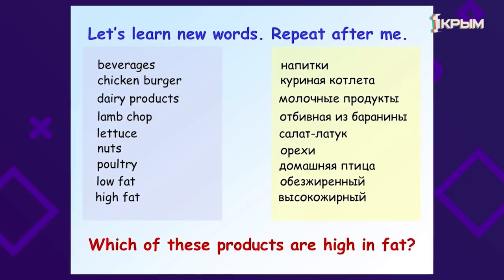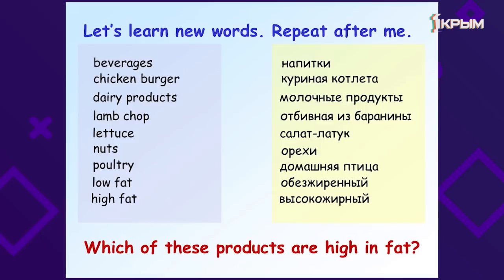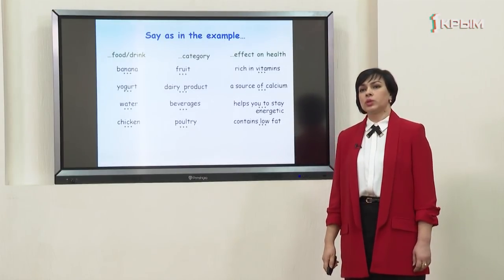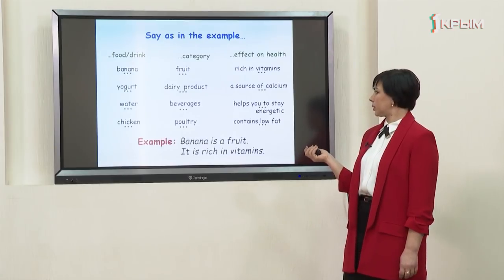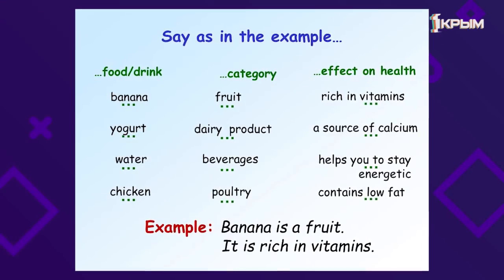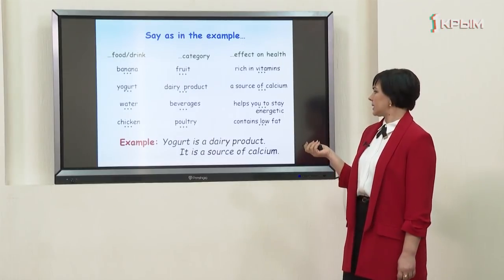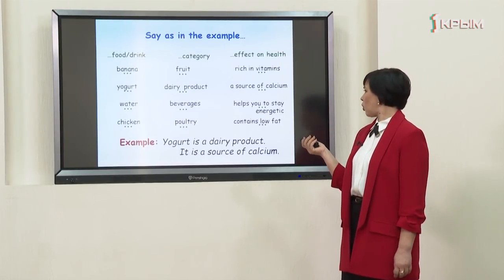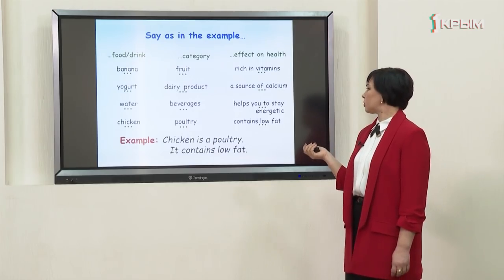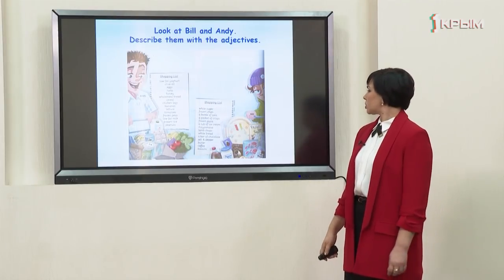Right — lamb chop and nuts are high in fat. Now let's find out what effect on health different products have. Look at the table and say as in the example: banana is a fruit, it is rich in vitamins. Now it's your turn: yogurt is a dairy product, it is a source of calcium. Water is a beverage, it helps you to stay energetic. Chicken is a poultry, it contains low fat.